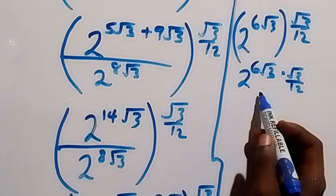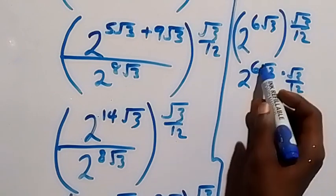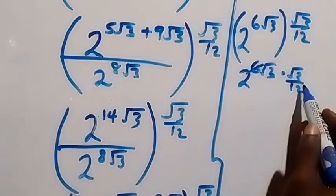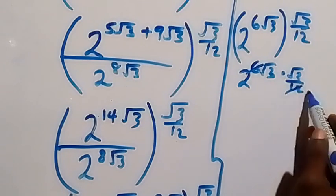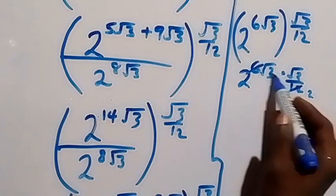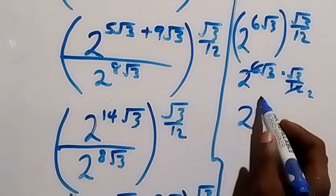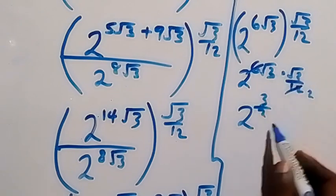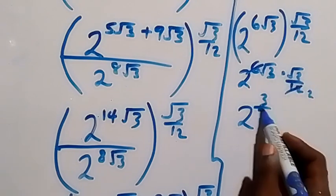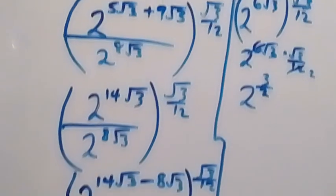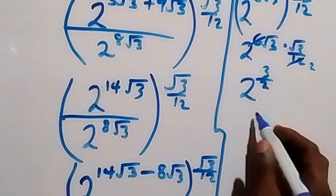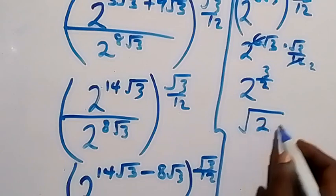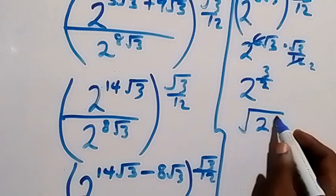Root 3 multiplied by root 3 gives us 3. So we have 6 times 3 over 12, which simplifies to 18 over 12, giving us 3 over 2. So the expression becomes 2 raised to power 3 over 2, which we can write as square root of 2 raised to power 3.